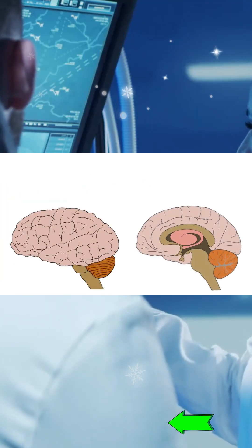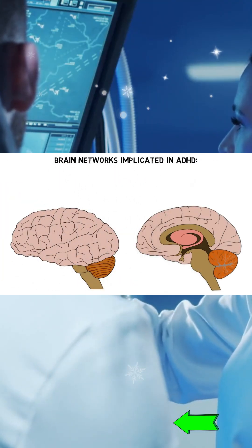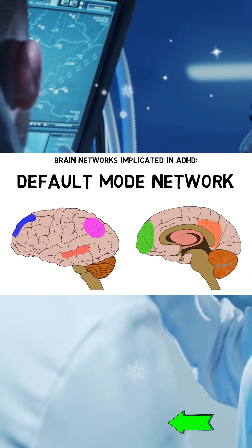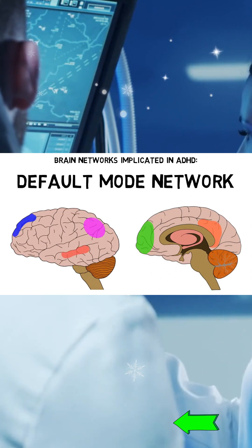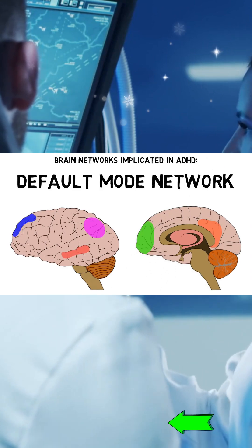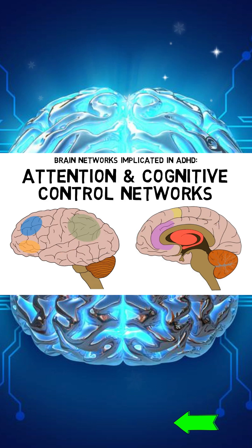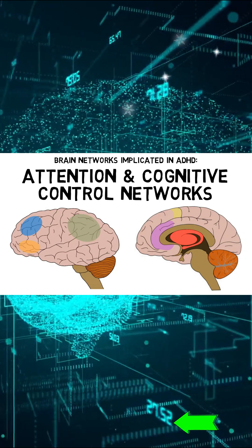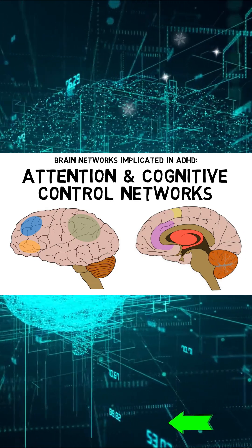Much of the recent research into the neuroscience of ADHD has focused on understanding the brain networks. Studies have found that people with ADHD have atypical connectivity in the default mode network, which might be associated with distractibility. In ADHD, activity in the default mode network is dysregulated and interferes with the function of networks involved in attention and cognitive control.